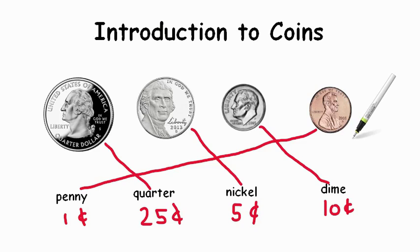So in review, this has been an introduction of coins. We've learned about the quarter, the nickel, the dime, and the penny. The penny's worth one cent, the nickel's worth five, the dime is worth 10 cents, and the quarter is worth 25 cents. Great job, and I can't wait to talk to you soon about math.